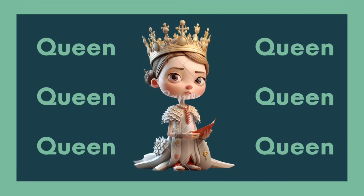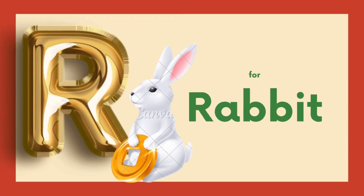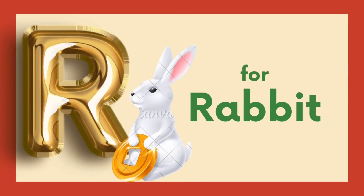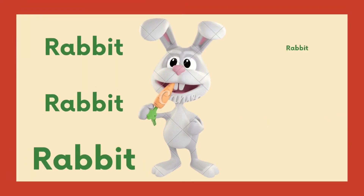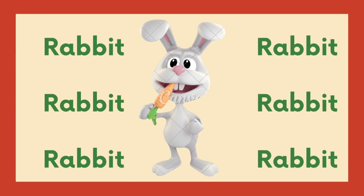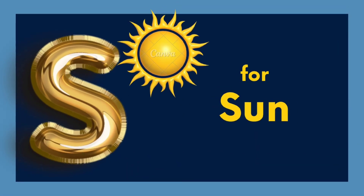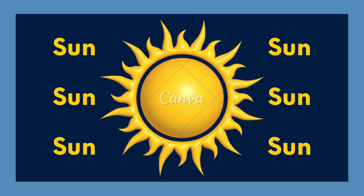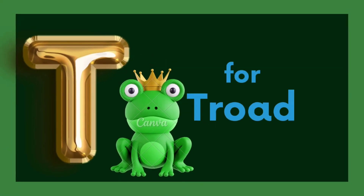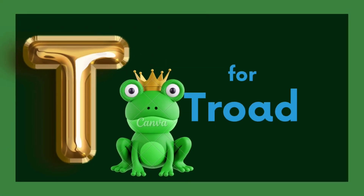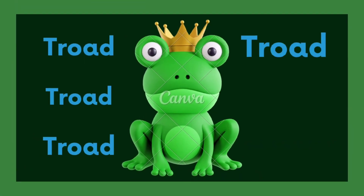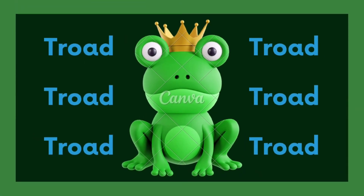Q is for Queen, Q-Q-Queen. R is for Rabbit, R-R-Rabbit. S is for Sun, S-S-Sun. T is for Toad, T-T-Toad.